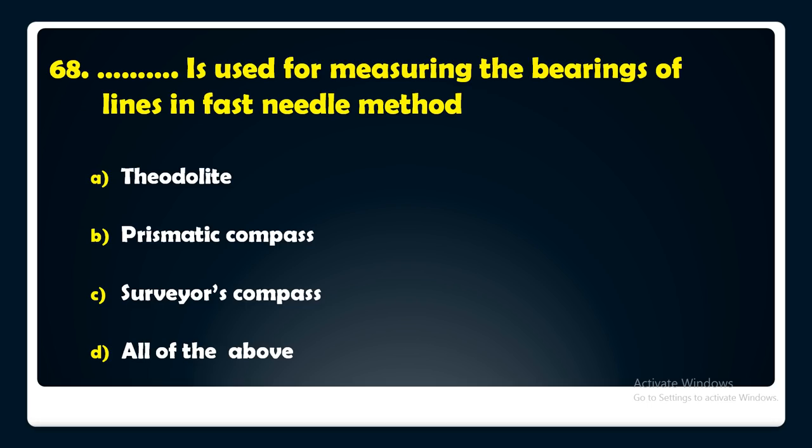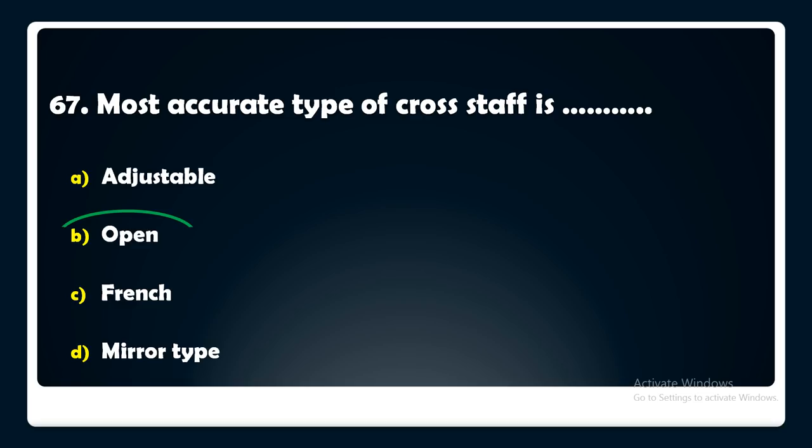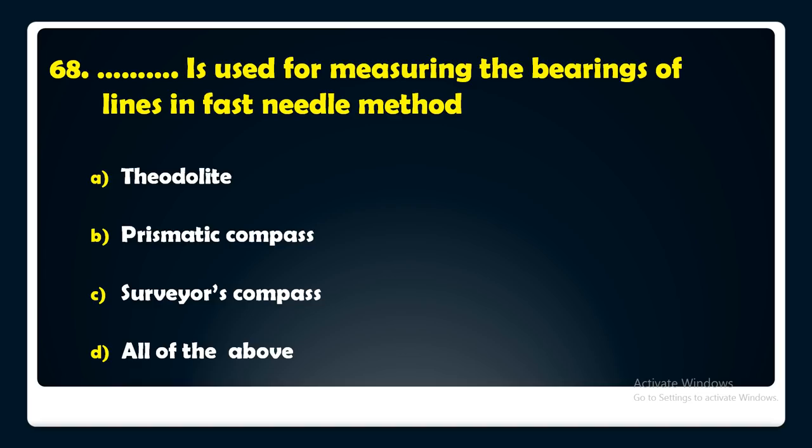Which instrument is used for measuring the bearings of lines in the fast needle method — theodolite, prismatic compass, surveyor's compass, or all of the above? The answer is: a theodolite is used for measuring the bearings of lines in the fast needle method.